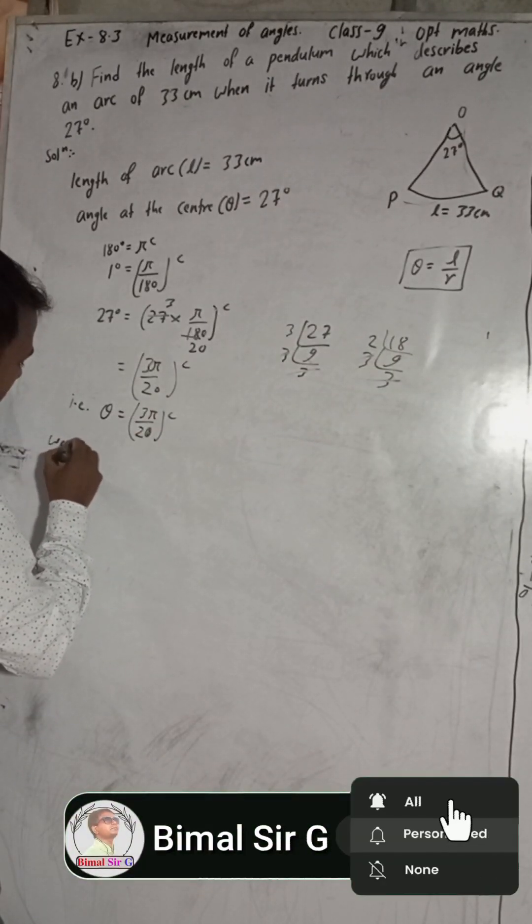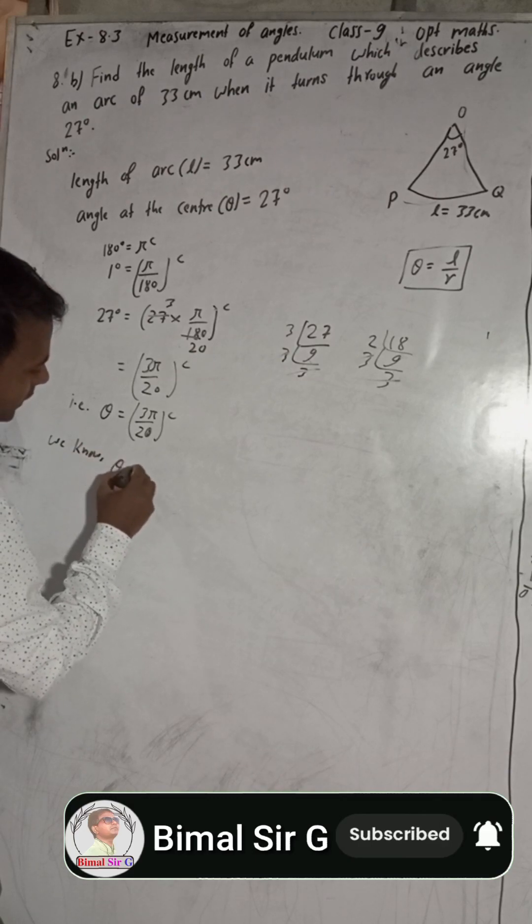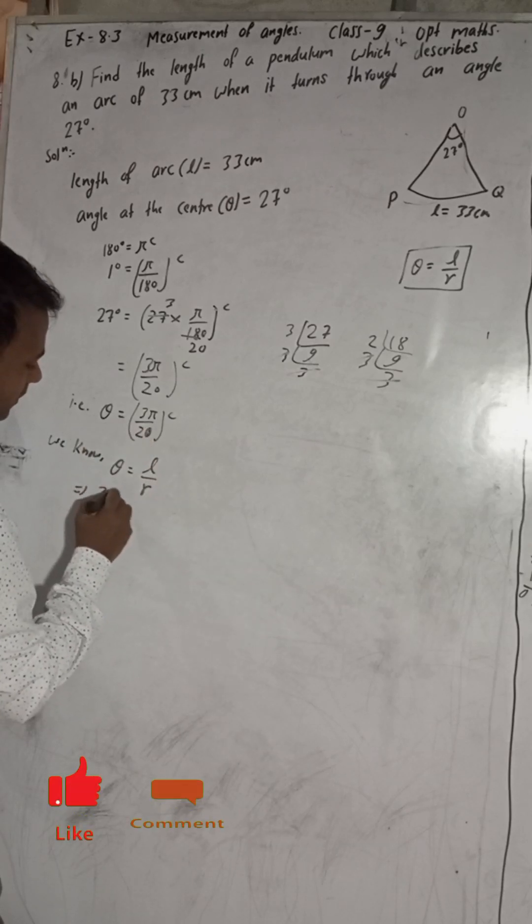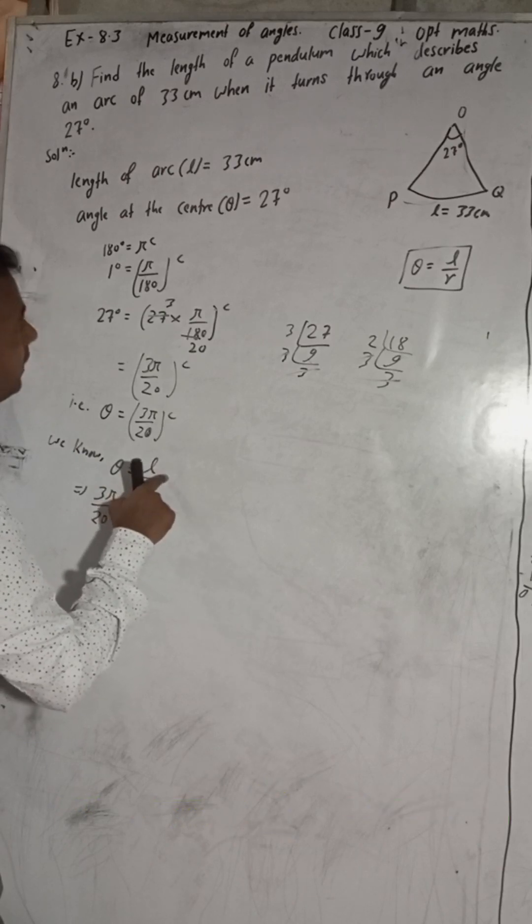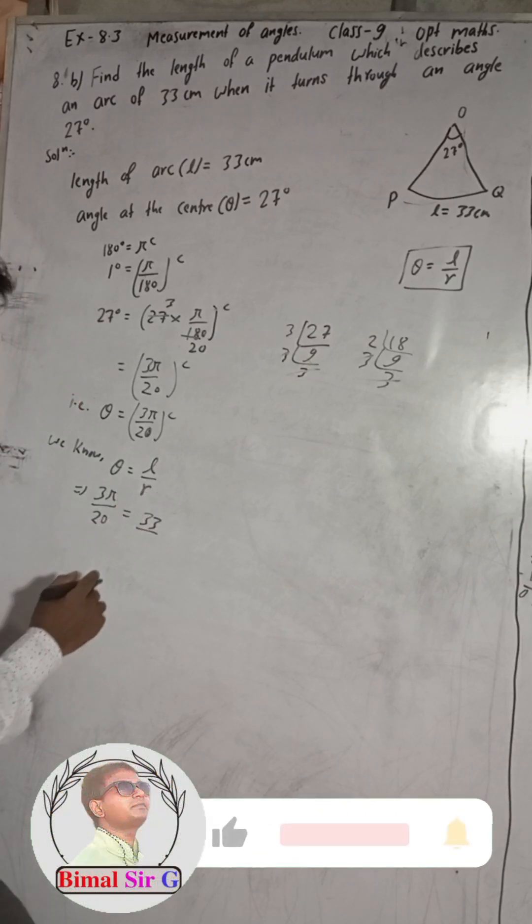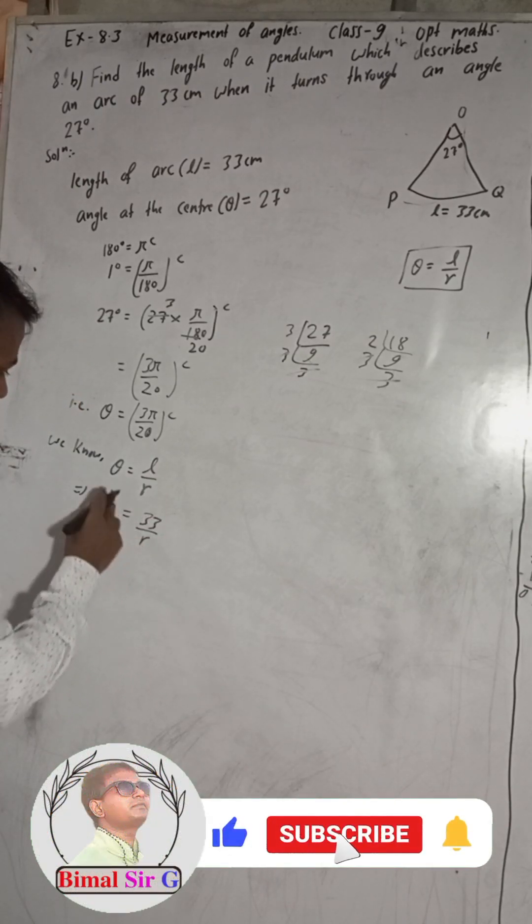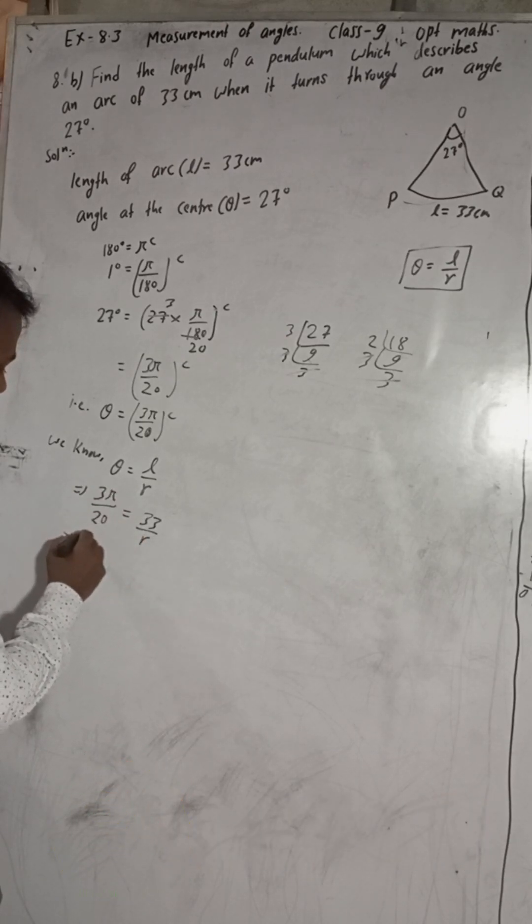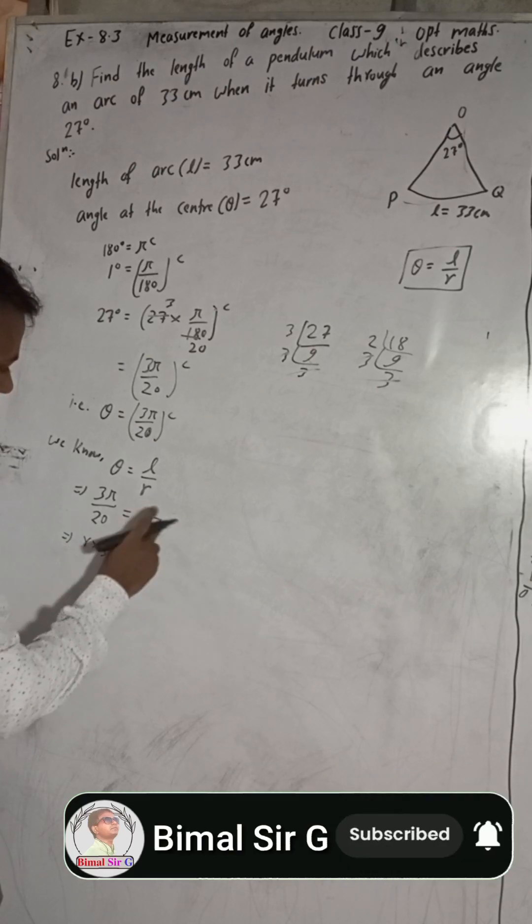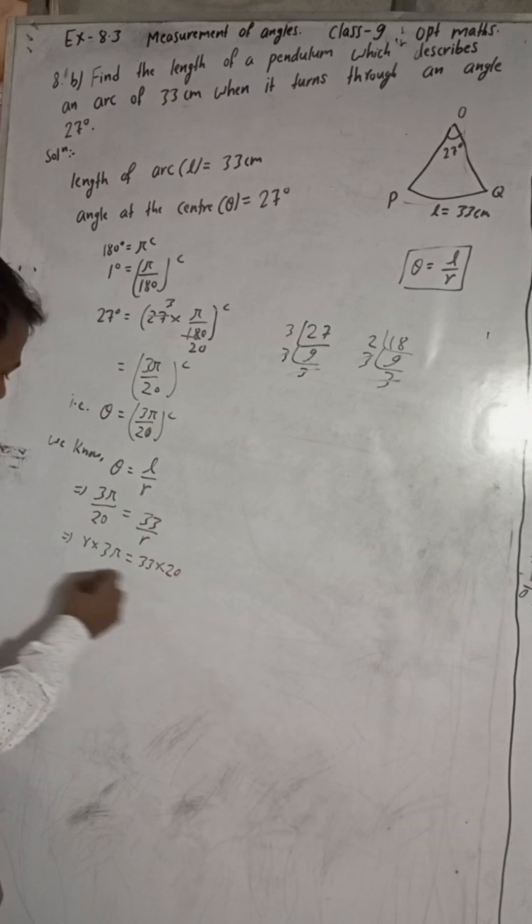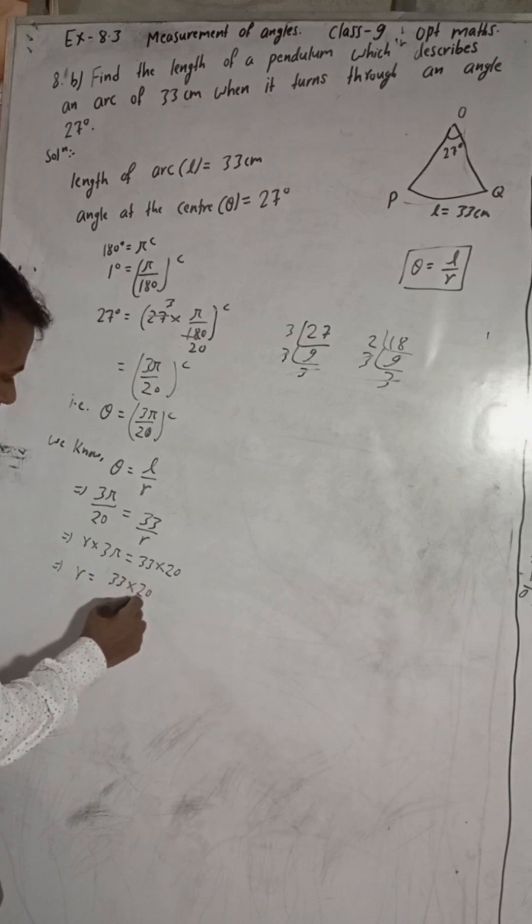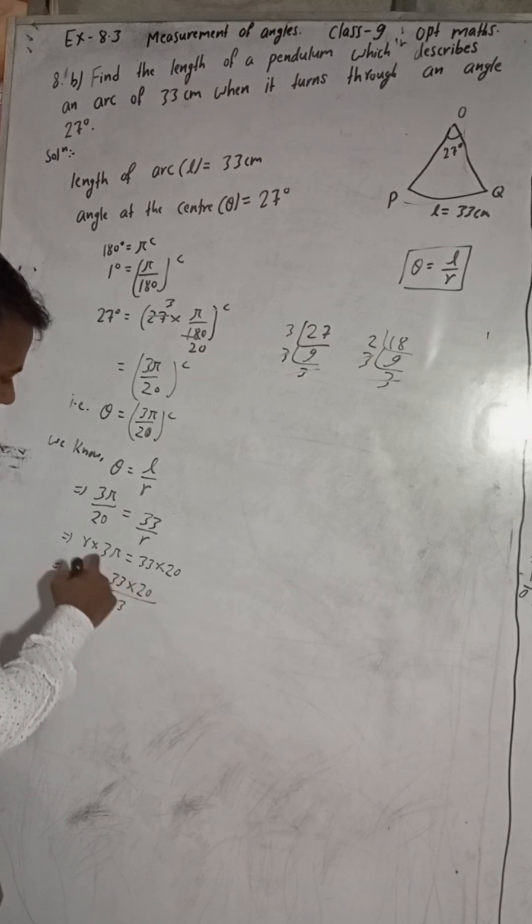Now we can write the formula. We know theta is equal to L by R. Implies theta is 3 pi by 20 is equal to L is 33 and R we have to find. Now when we cross multiply, this will be R into 3 pi is equal to 33 into 20. Implies R is equal to 33 into 20 by 3 pi.